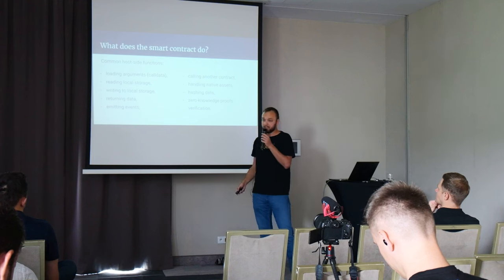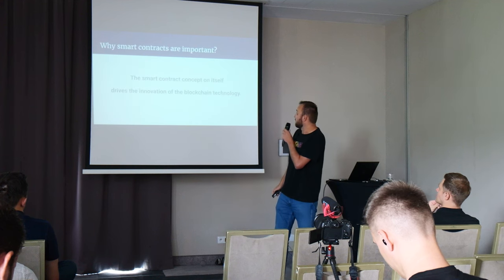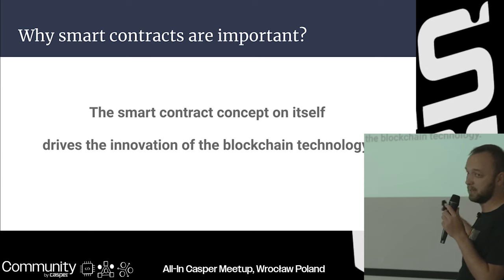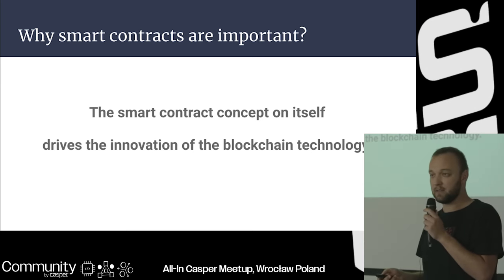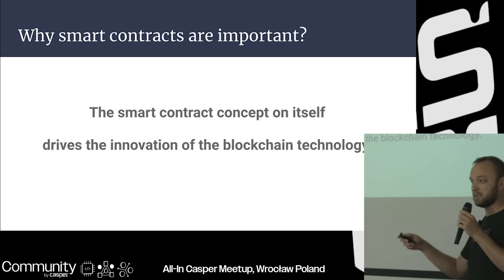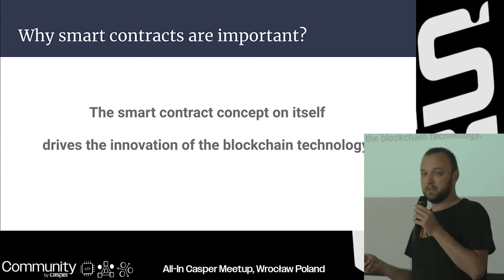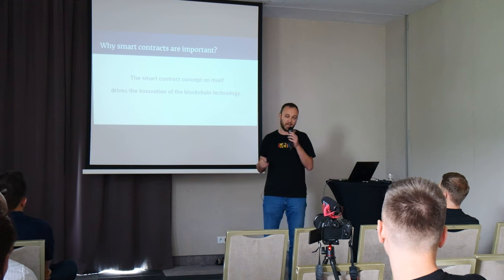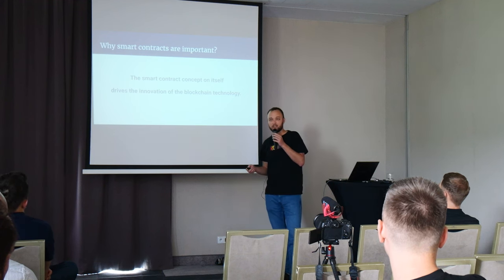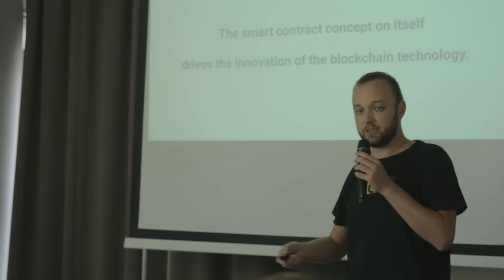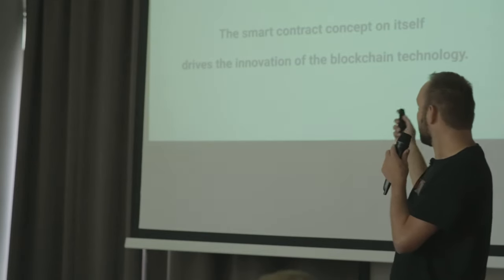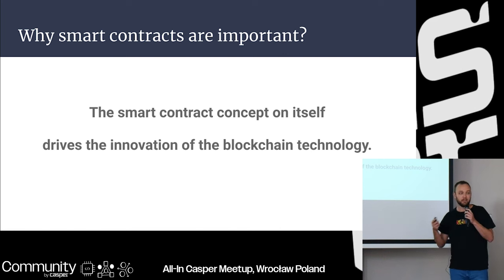Hashing and zero-knowledge proof verification are very important right now. The smart contract concept itself drives the innovation of blockchain technology. Building a blockchain is hard and takes a long time, but blockchains with virtual machines these days can be seen as a cloud platform — you create a program, send it to the cloud, and it executes. A lot of innovation happens at this layer, not on the blockchain layer itself, because we can quickly introduce new versions and build new products.